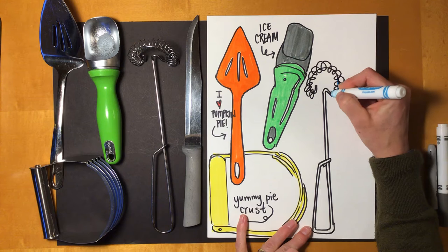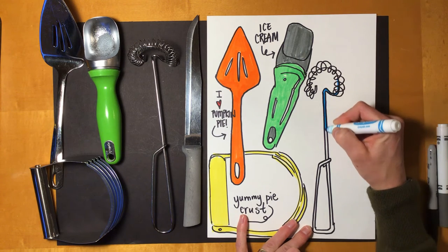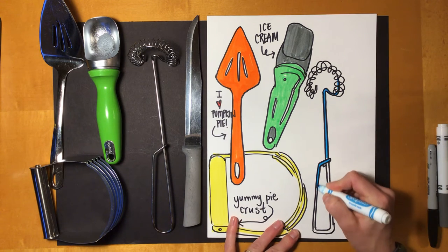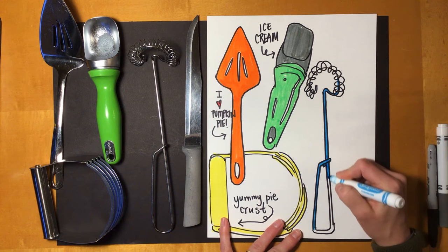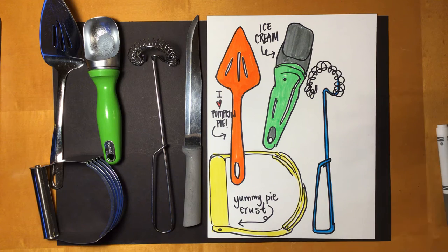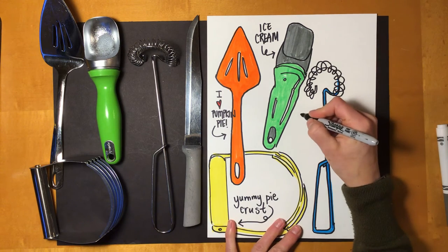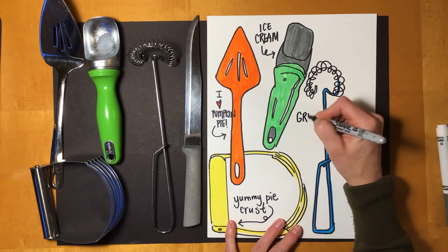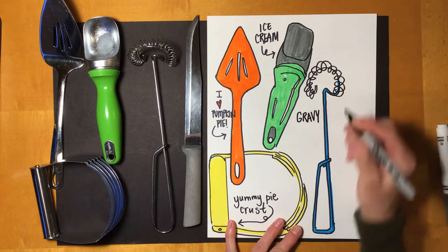We'll make it a nice blue color. This is about being colorful and having fun. All right. It's the gravy that I like.